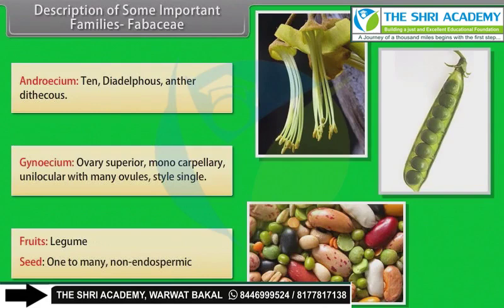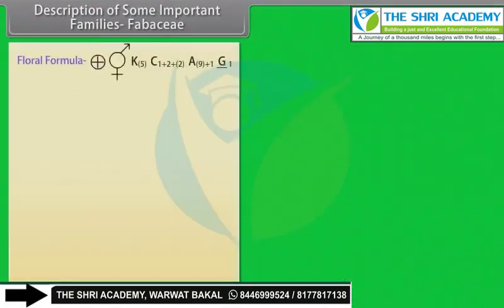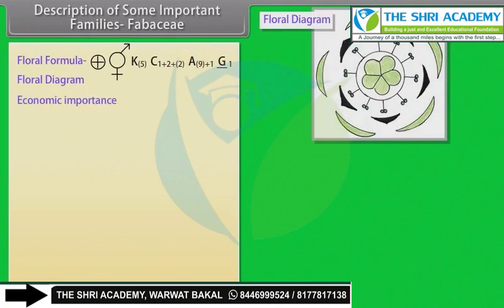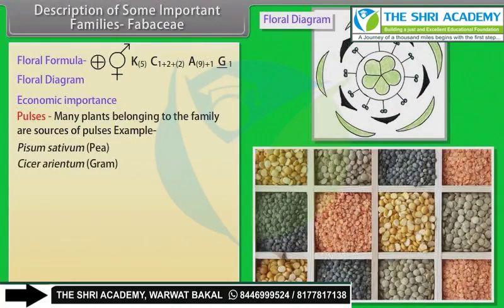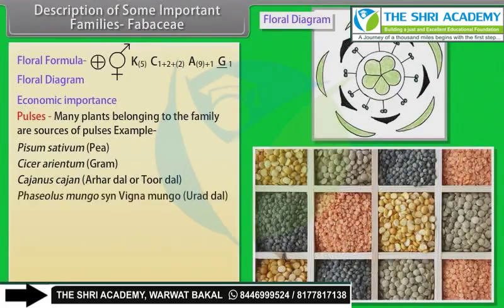Androecium: 10, diadelphous, dithecous. Gynoecium: ovary superior, monocarpellary, unilocular with many ovules, style single. Fruits: legume. Seeds: one to many, non-endospermic. Economic Importance — Pulses: many plants belonging to the family are sources of pulses, example: Pisum sativum (pea), Cicer arietinum (gram), Cajanus cajun (arhar dal or toor dal), Phaseolus mungo / Vigna mungo (urad dal).